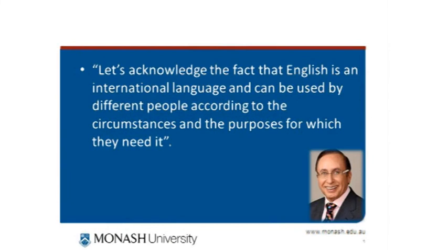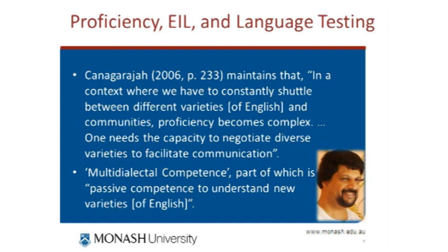Jack Richards continues: let's acknowledge the fact that English is an international language and can be used by different people according to the circumstances and purposes for which they need it. In the area of language testing and proficiency, there have been debates about ways we need to look at proficiency differently. Suresh Canagarajah maintains that in a context where we constantly shuttle between different varieties of English and communities, proficiency becomes complex. One needs the capacity to negotiate diverse varieties to facilitate communication, and he talks about multi-dialectal competence — including passive competence to understand new varieties of English.